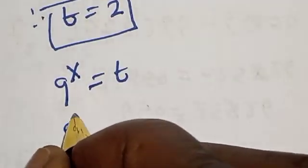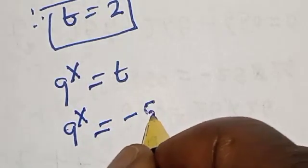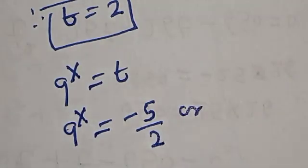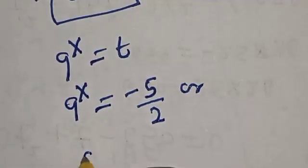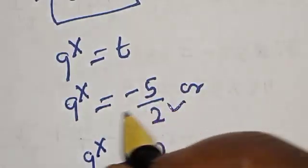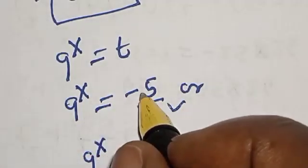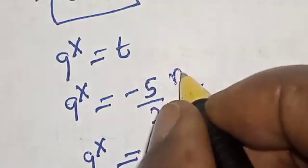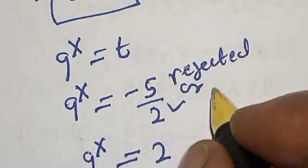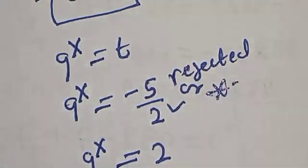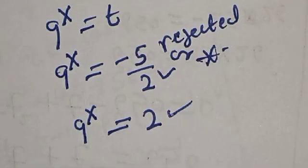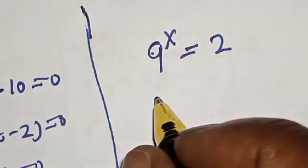Recalling that 9 raised to power s equals t: at t equals negative 5 over 2, we have 9 raised to power s equals negative 5 over 2. But 9 raised to power s cannot equal a negative number, so this is rejected. Therefore 9 raised to power s equals 2 is our true solution.